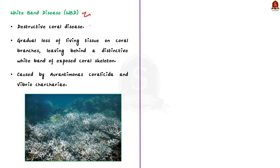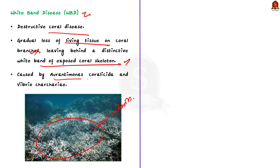Now let us see some points about the white band disease. White band disease is a destructive coral disease that primarily affects species like staghorn and elkhorn corals in the Caribbean Sea. It is characterized by gradual loss of living tissue on coral branches, creating a distinctive white band of exposed coral skeleton. This disease is caused by harmful bacteria such as Aurantimonas corallicida and Vibrio carchariae. White band disease has had a devastating impact on corals and the reefs they build, as it can lead to complete death of entire colonies. With this, let us conclude this discussion and take up the next news article.